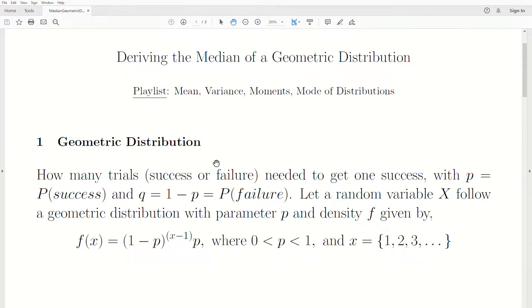The geometric distribution is how many trials needed to get one success, with p equal to the probability of success and 1 minus p the probability of failure. Let a random variable X follow a geometric distribution with parameter p and density f given by f(x) = (1-p)^(x-1) * p, where 0 < p < 1 and x can take on the values 1, 2, 3 to infinity.